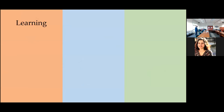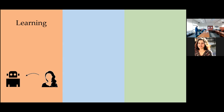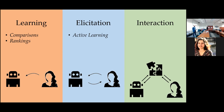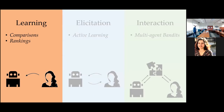I'll divide this problem into three categories. First, the learning part: how can we use information acquired from humans to learn their objectives or reward functions — humans can give us different forms of data, two of which are comparisons and rankings. Then I'll move to elicitation: how the robot can elicit information from people by asking questions, which is an active learning problem. Finally, I'll talk about interaction: using the learned human models to better plan the robot's policy, specifically multi-agent methods.